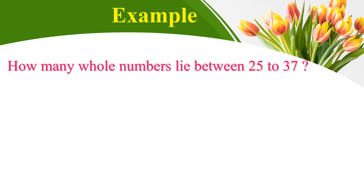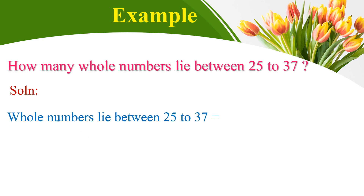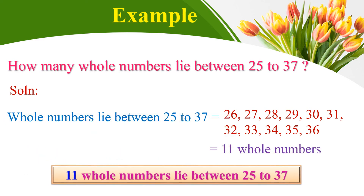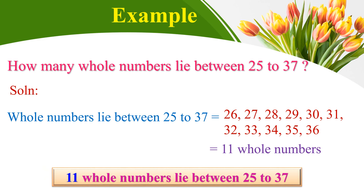How many whole numbers lie between 25 and 37? After 25 we start counting: 26, 27, 28, 29, 30, 31, 32, 33, 34, 35, 36. Counting those numbers: one, two, three, four, five, six, seven, eight, nine, ten, eleven — so we have 11 whole numbers. Therefore 11 whole numbers lie between 25 and 37.